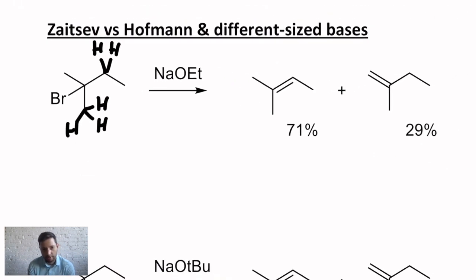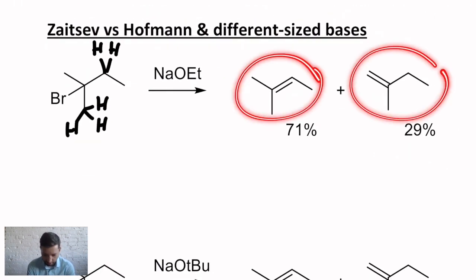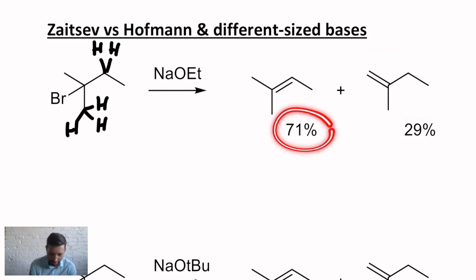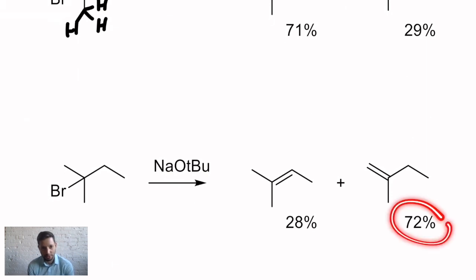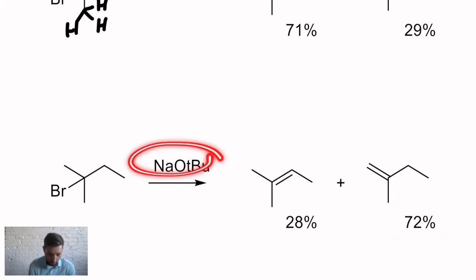So I have two different possible beta Hs that I could lose from, and that explains the two different products that we get, two different constitutional isomers. But I seem to have a preference for one of them. And then it switches when I simply change the base. That's all that's changed. So what's going on here? Let's redraw this starting material.